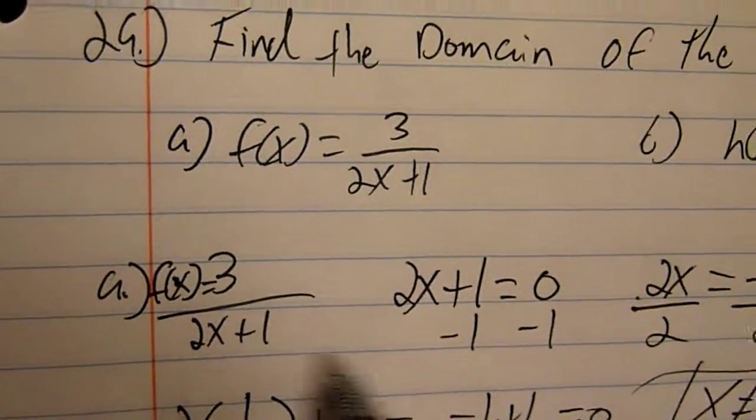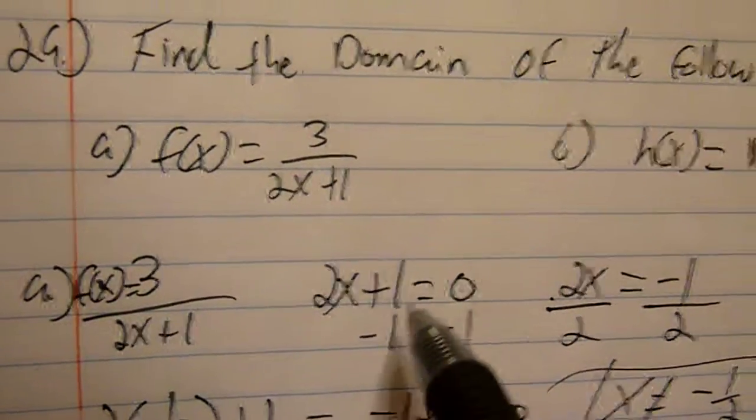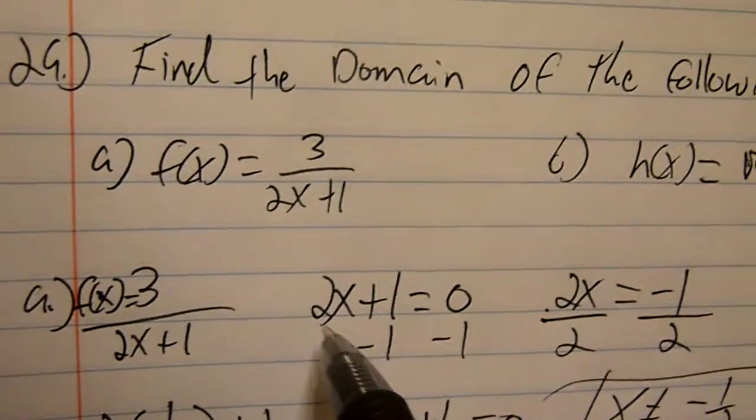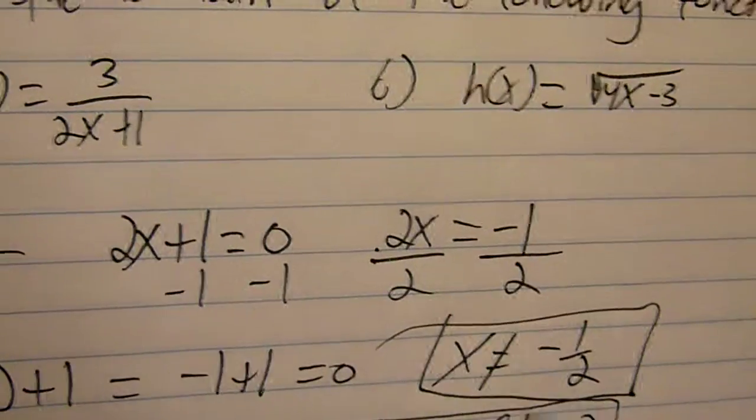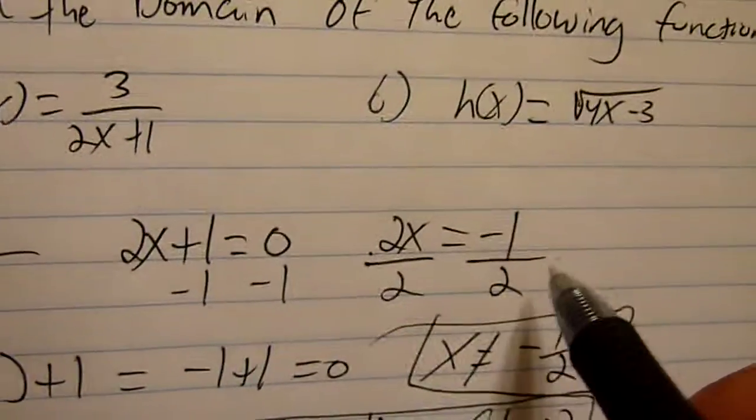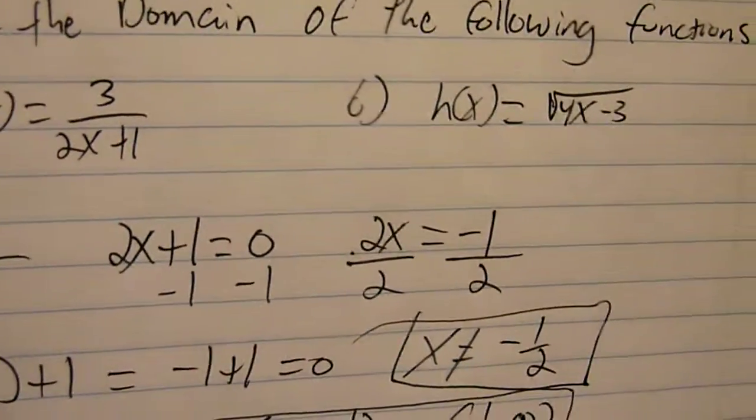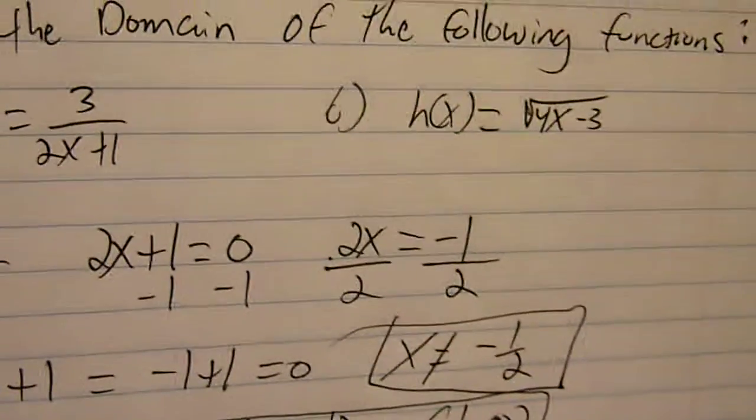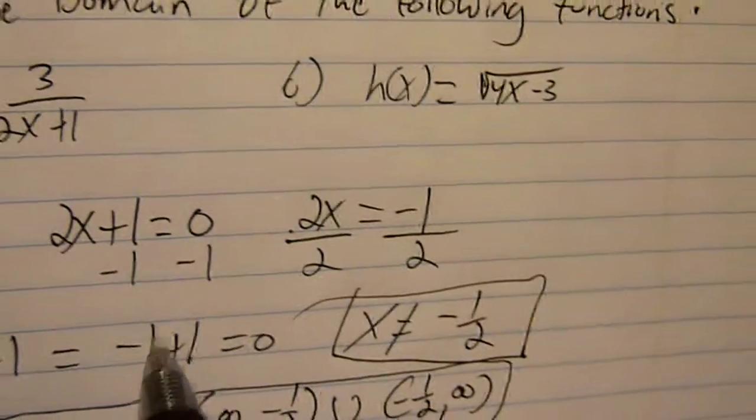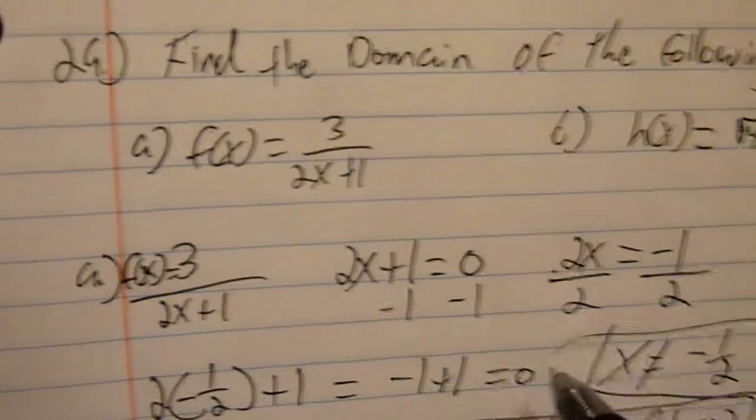As you see, I just took the denominator and solved it for x. Subtract 1 from both sides to get x by itself. 2x is equal to negative 1. Divide both sides by 2. x is equal to negative 1 half. Plug it back into the equation: 2 times negative 1 half plus 1 equals negative 1 plus 1, which is equal to 0.